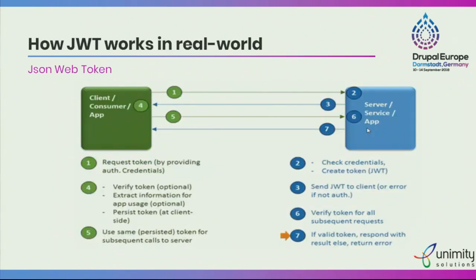How does JWT work? JWT and SAML work similarly. In SAML we have XML data; in JWT we have a JSON object. Once a user requests a service or application, it sends the authentication details. On the server side, it verifies the authentication details, creates the JWT token, and sends it back to the client. The client stores it and uses it in subsequent requests. Whenever the next request comes, it verifies the token again and grants access. If it's a wrong token, it returns an error.